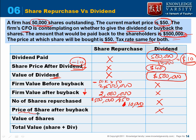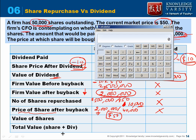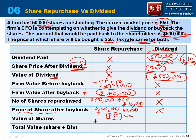After the buyback, the number of shares decreases by 10,000, going from 50,000 to 40,000. The firm value is now $2 million with 40,000 shares outstanding. Computing the share price: $2 million divided by 40,000 equals $50. So the share price remains at $50 after the buyback.